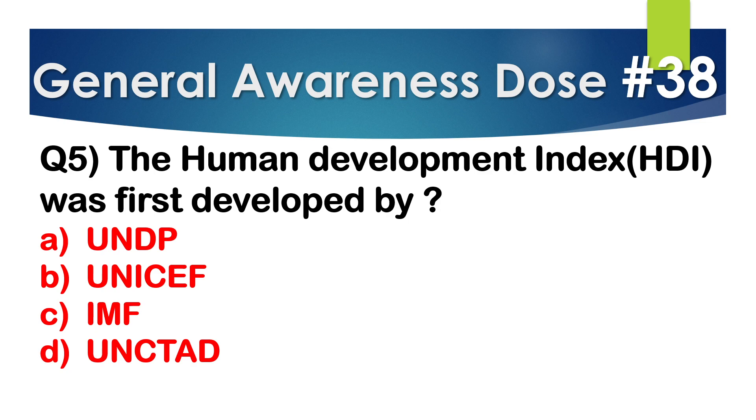Last question: The Human Development Index (HDI) was first developed by whom? Correct answer: Option A — UNDP. Subscribe to the Vision Map channel.